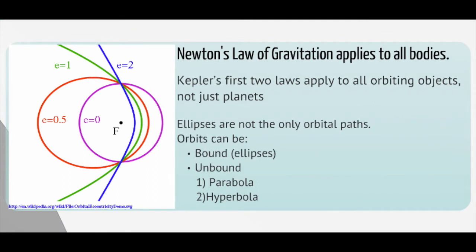Newton's law of gravitation gives us Kepler's laws, and we find that Kepler's laws can apply to more things than just planets. And we find we can have more than just ellipses as orbits. I can have a bound ellipse, which is like the Earth orbiting the Sun, and those are ellipses. I can also have unbound ellipses. I can have parabolic and hyperbolic unbound orbits.